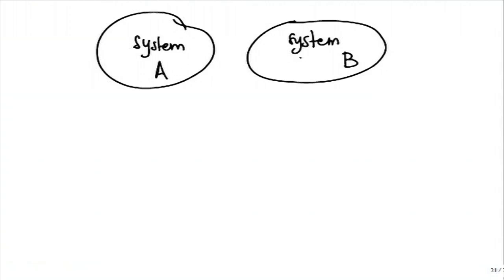Instead of system A and system B, if you want, you can write system and surroundings — that is perfectly okay — or even primary system and secondary system. If you want to call system B as surroundings, be sure that it is defined as a proper thermodynamic system with appropriately defined boundaries. Do not be so general as to say surroundings is everything outside the system; that is too loose a definition.